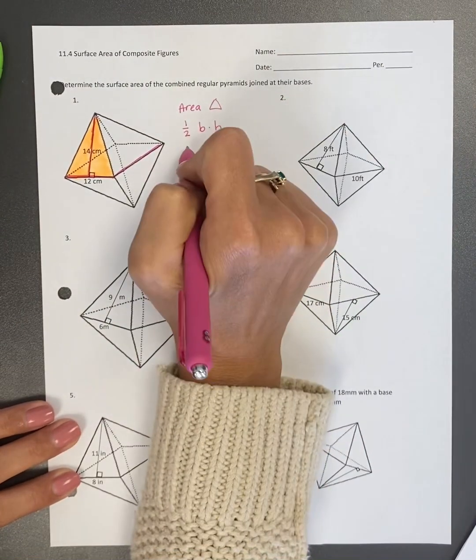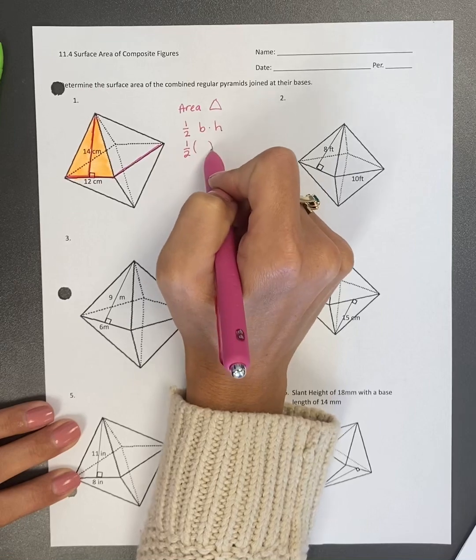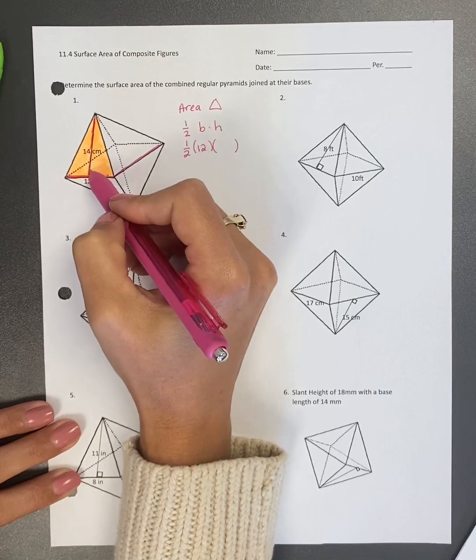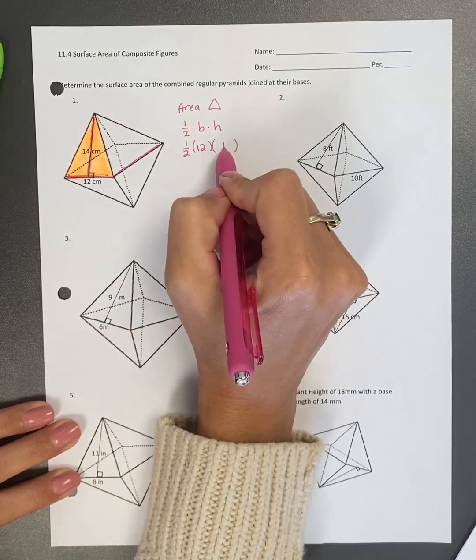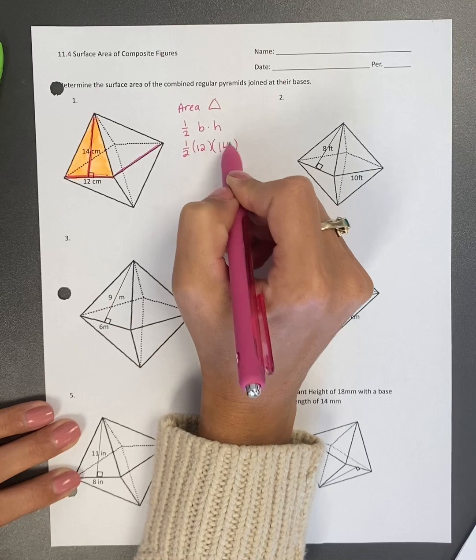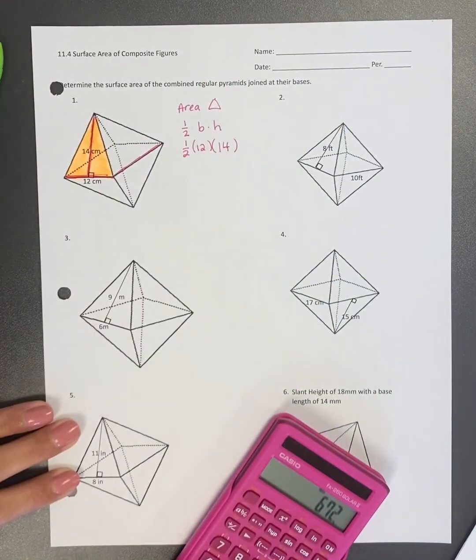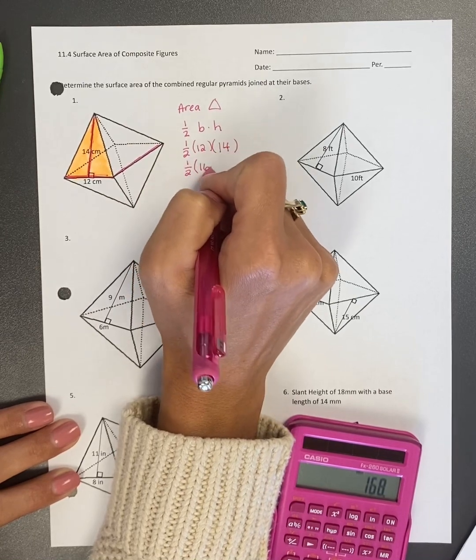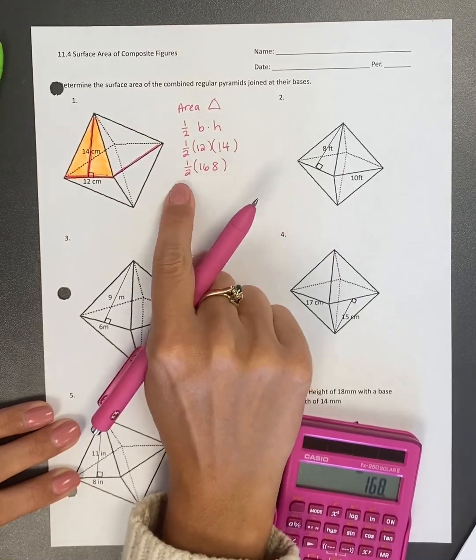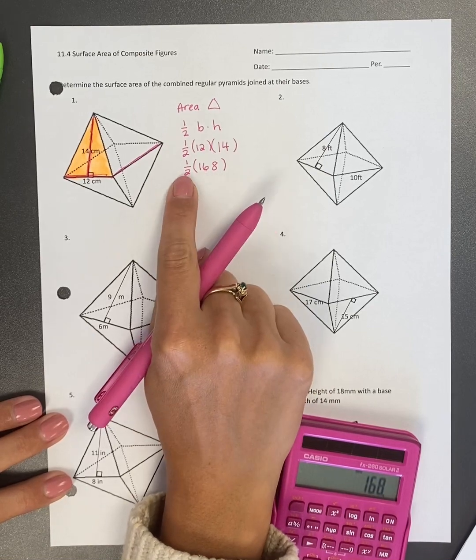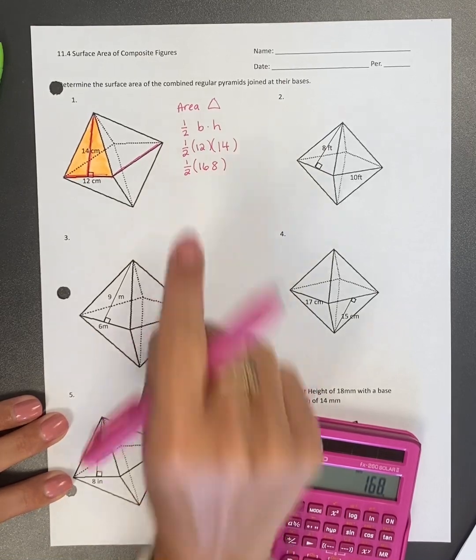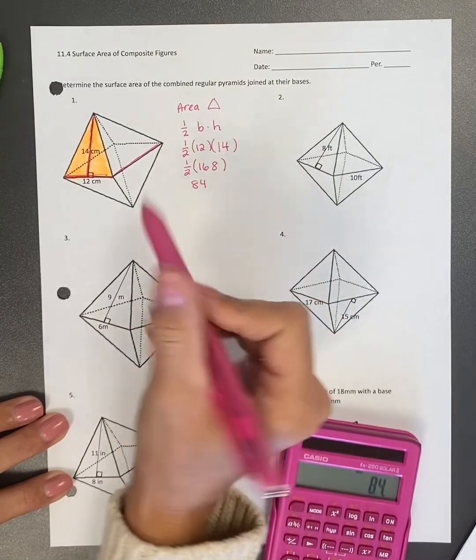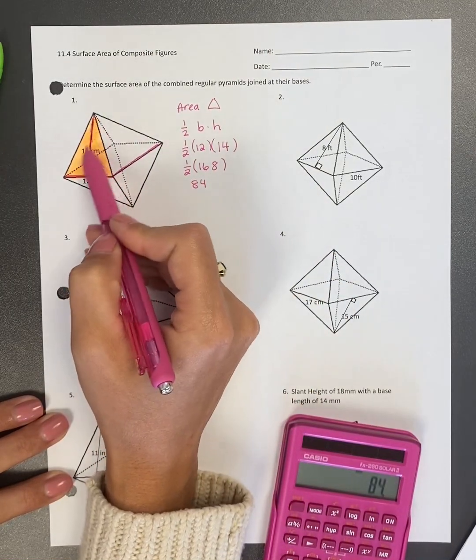So I'm going to bring down my one half. I'm going to bring down my base length. So the base length is 12 for all of these. The height of the triangle is 14. And now I'm going to use my calculator. 12 times 14 is 168. And then I can either think about this as multiplying by 0.5 or dividing by two because I'm cutting it in half. So it should be getting smaller. So I'm going to do 84.